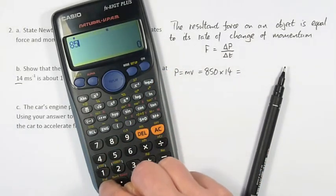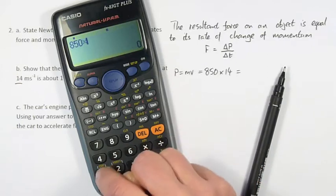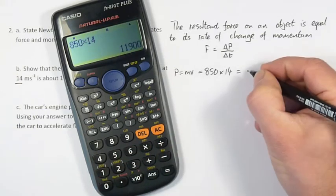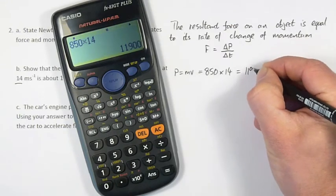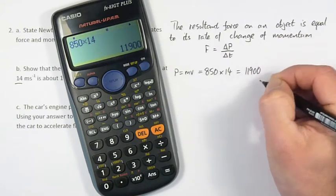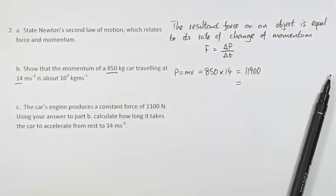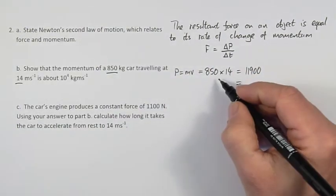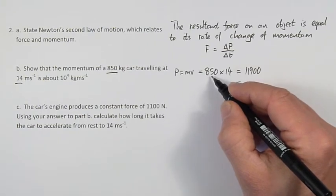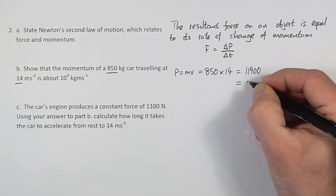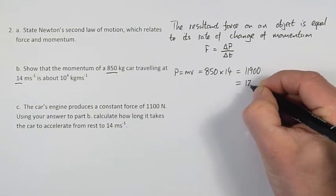So 850 kilograms multiplied by 14 metres per second gives me an answer of 11900 on the calculator. But we can see that each of the numbers given to us are to two significant figures, so we will give the answer also to two significant figures.